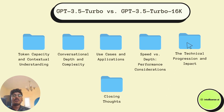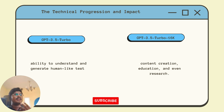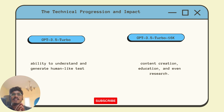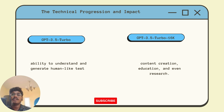Let's take a moment to appreciate the technological advancement here. GPT-3.5 Turbo 16k represents an evolution in AI's ability to understand and generate human-like text. It showcases how AI models are bridging the gap between language understanding and contextual reasoning. This technological leap has profound implications for industries like content creation, education, and research.